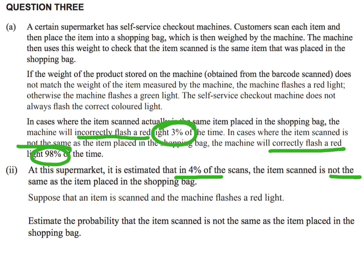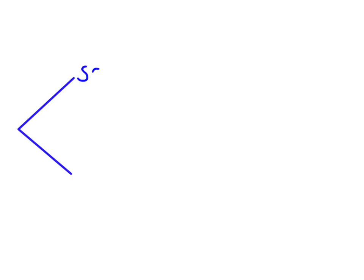We're going to look first at the probabilities and put them together using a tree diagram. The first thing that happens in the decision process is the shopper decides whether the item scanned is going to be the same or different to the item placed in the bag. So that's our first branching — same versus different.